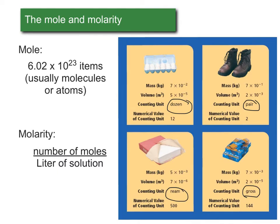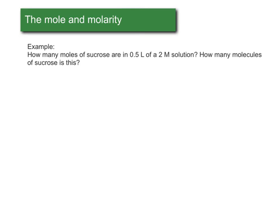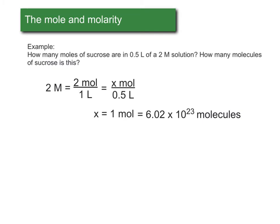A liter is one measure of volume — the big soda bottles are typically two-liter bottles, so that gives you an idea of how big a liter is. So how many moles of sucrose are in 0.5 liters of a two molar solution? Two molar tells us we have two moles per one liter of solution. If we have half a liter, then we have half as many moles, which equals one mole of sucrose per half a liter — we can work that out with a proportion. How many molecules is this? If we have one mole of sucrose, we have 6.02 × 10²³ molecules of sucrose, which is a whole lot. That means we have six with 23 zeros after it — a huge number.